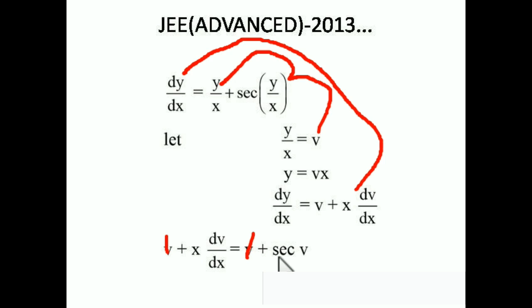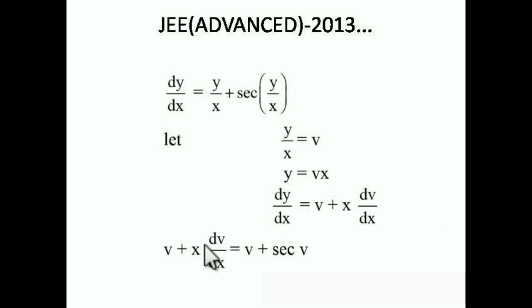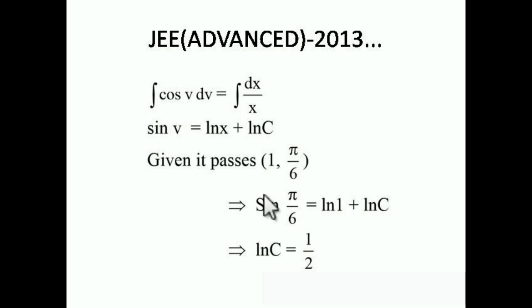Now apply the variable separable method — put v on one side and x on the other. We get (1/sec v) dv = (1/x) dx, i.e., cos v dv = dx/x. Integrating both sides: sin v = ln x + ln c.